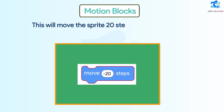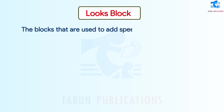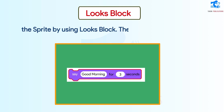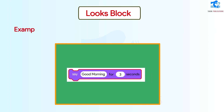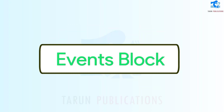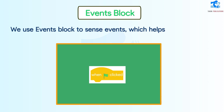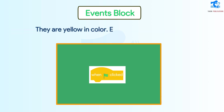This will move the Sprite 20 steps back on the stage. Looks block: The blocks that are used to add speech and thought bubbles to the Sprite by using looks block. They are purple in color. Example: If you want to add speech to the Sprite for three seconds with the message 'good morning', follow the instructions. Events block: We use events block to sense events, which helps to run the script. They are yellow in color. Example: The block is used to activate the script.